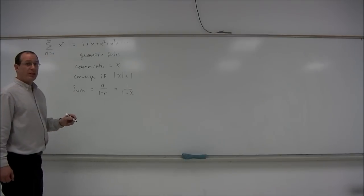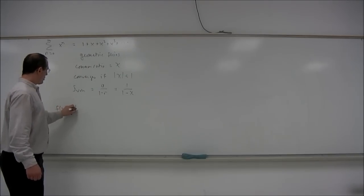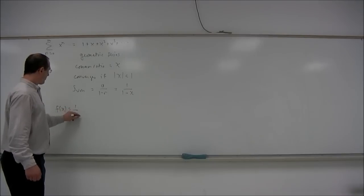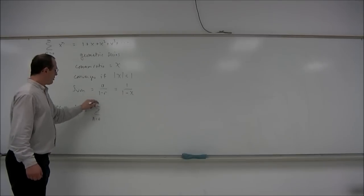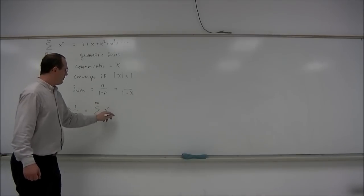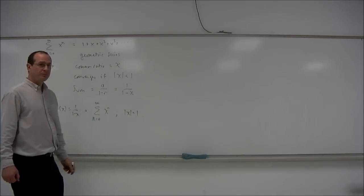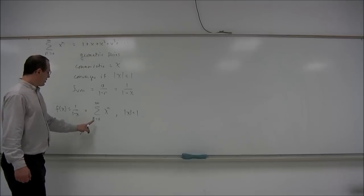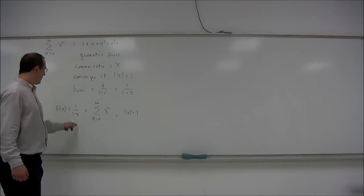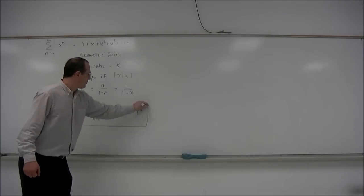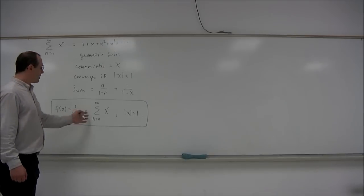So we can look at this in the following way: the function f of x equals 1 over 1 minus x is equal to the power series, summation n equals 0 to infinity of x to the n, as long as the absolute value of x is less than 1. This is called a power series representation for the function, and this is a very important example. We can figure out power series representations for many other functions based on this one example.